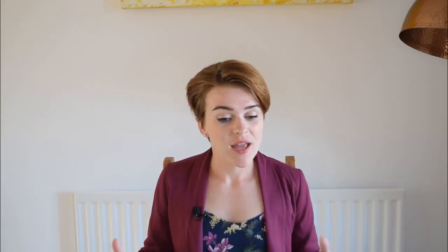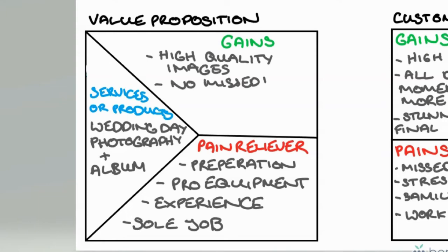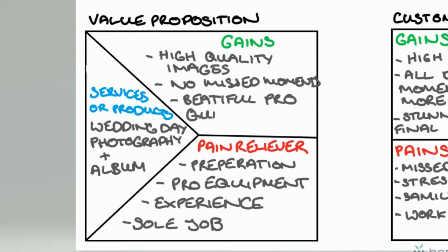In the gain creator section, you want to list what other things your products will provide that are positive results going to exceed their expectations — how are you going to wow them? In this situation, I'm going to provide a beautiful album with high quality images. I won't miss any moments because I'm super prepared, have professional equipment, and loads of backup. They will have a beautiful, professional-looking album.